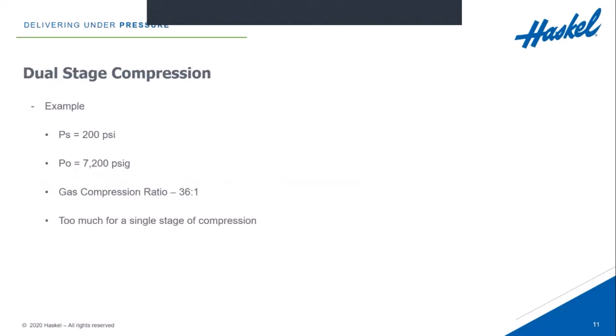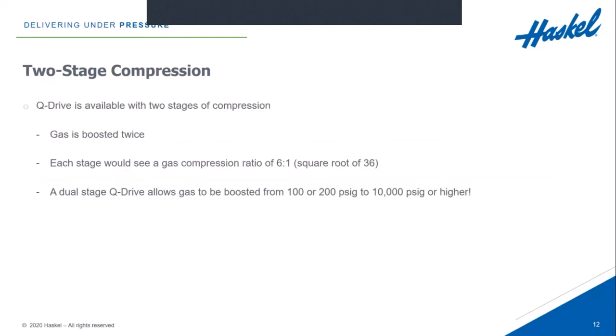Here's an example. If you have a gas supply pressure of 200 PSI and you want to get that gas up to 7,200 PSI, dividing 200 into 7,200 gives a gas compression ratio of 36 to one — too much for a single stage on any compression system. However, the Q-Drive is available with two stages of compression on a single piece of equipment. Each stage would see a gas compression ratio of approximately six to one, which is the square root of 36. So a dual-stage Q-Drive allows gas to be boosted from just 100 or 200 PSI all the way up to 10,000 PSI or higher on two stages on a single piece of equipment.